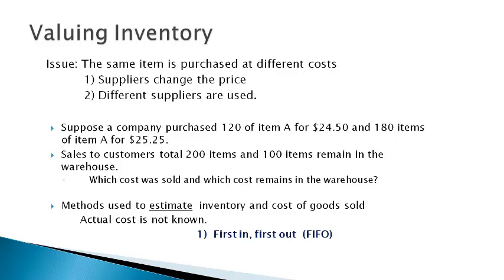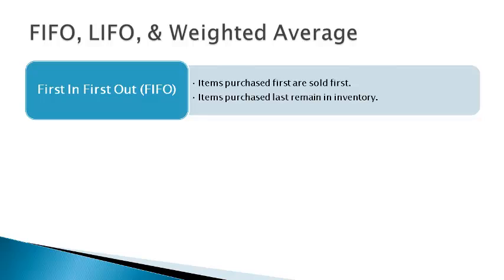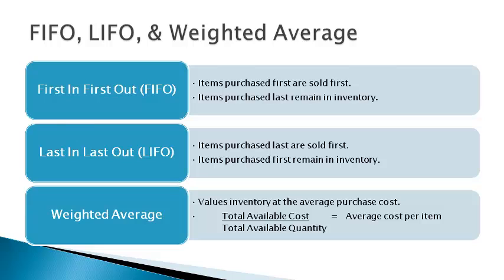The three methods commonly used are First In First Out, Last In First Out, and Weighted Average. These methods are used with the perpetual method or the periodic method. The FIFO method assumes the items purchased first are sold first; items purchased last remain in inventory. The LIFO method assumes that items purchased last are sold first; items purchased first are then assumed to remain in inventory. The Weighted Average method values inventory at the average purchase cost, which is total available cost divided by total available quantity to get the average cost per item.